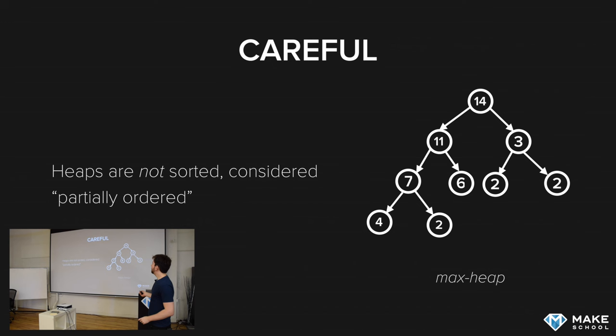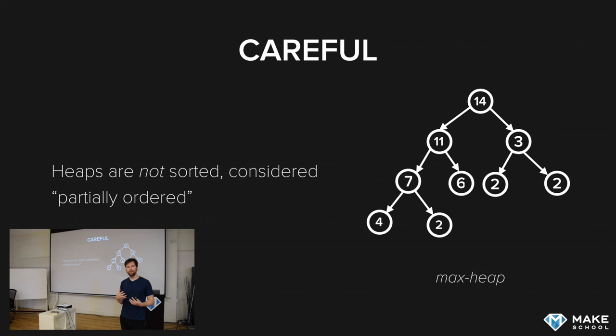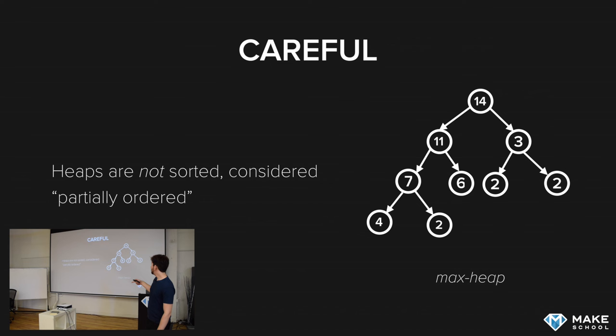This is a caveat: heaps are not considered sorted. So it's not like a binary search tree where we can very easily get the elements out in sorted order. In binary search trees we can do an in-order depth-first traversal to get all the items in order — we cannot do that with heaps. Heaps are not sorted; they're considered partially ordered. This is a max heap — we can see that 14 is the largest value and for every element it is less than or equal to its parent.